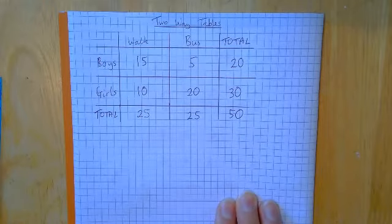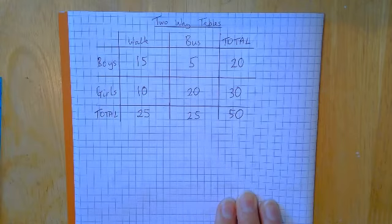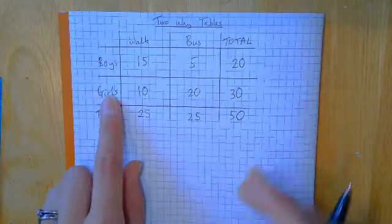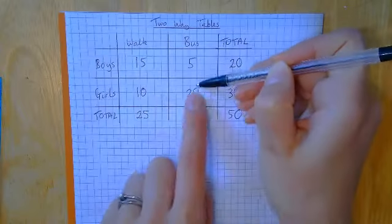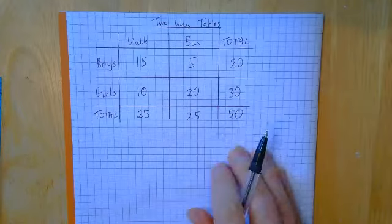Once we've filled in our two-way table, you can be asked to answer some questions about it. So the questions might be things like how many girls got the bus? Well, we would find girls and bus, which is 20.